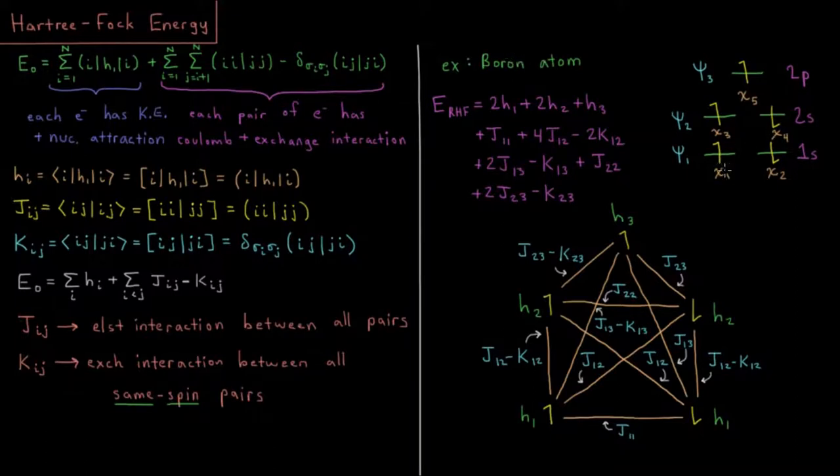So we can imagine we could have either three spatial orbitals or five spin orbitals that we might consider here. Psi1 being the 1s orbital, psi2 being the 2s orbital, psi3 being one of the three 2p orbitals, doesn't matter which. And we could equivalently have chi1 through chi5, indicating the spin orbitals being spin up and spin down in each of the spatial orbitals.